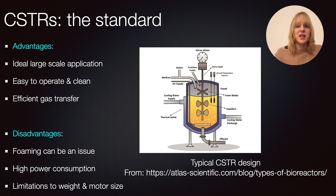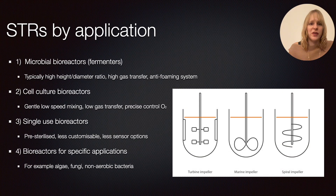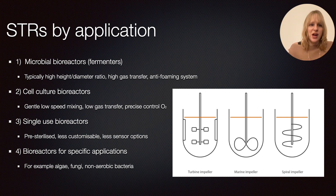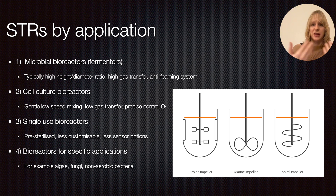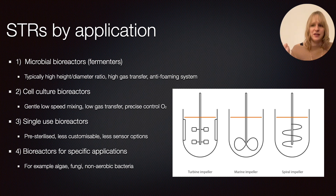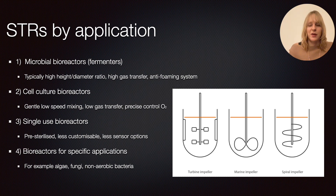Looking at types of stirred tank reactors broken down by application, the first two relate to what type of microorganism you're working with. For a microbial bioreactor or fermenter, you typically have a very high height-to-diameter ratio because that allows more efficient gas transfer, and the anti-foaming system becomes really important. Different impellers are associated with this — some generate much higher shear to facilitate high gas transfer, while others like the marine impeller need less energy input for gentle mixing, making them more suitable for gentle cell culture systems that can't tolerate high shear.